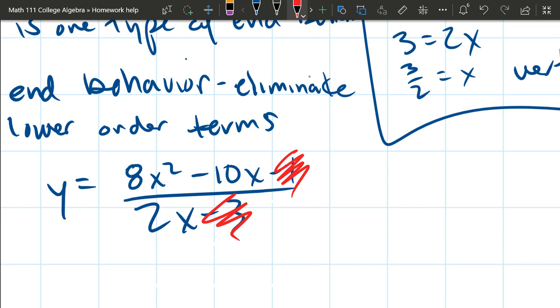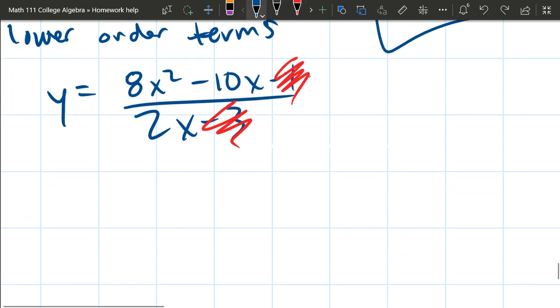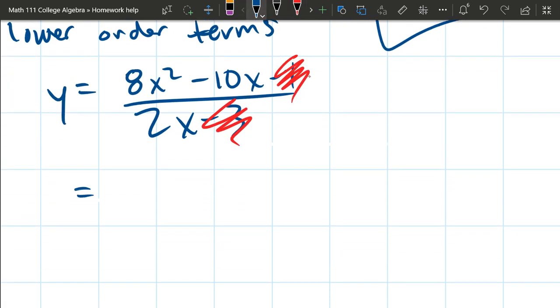But we're not going to quite throw away that negative 10x. Because you're about to see what's going to happen, it has the same power as the denominator x has. So we're going to keep it.